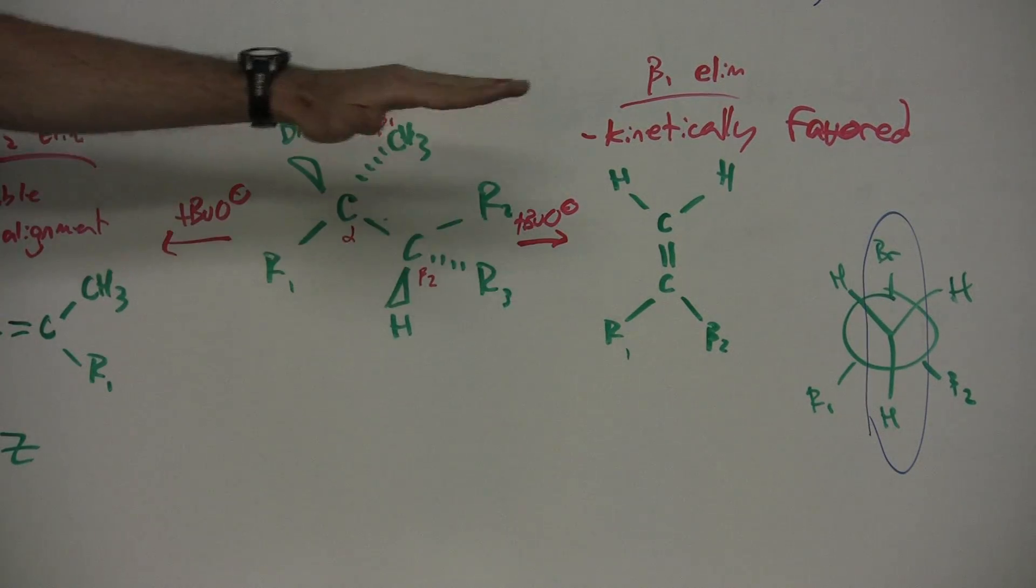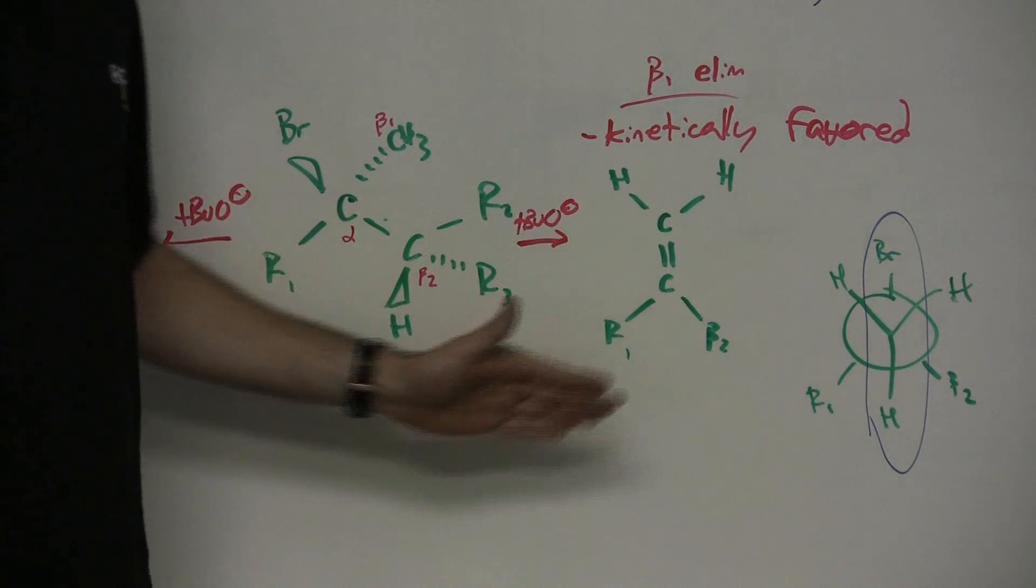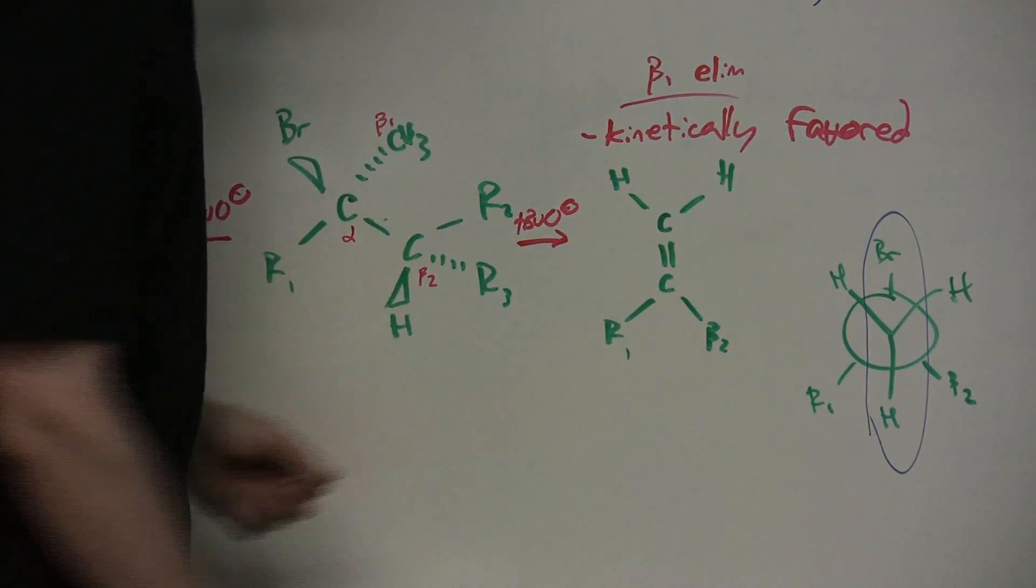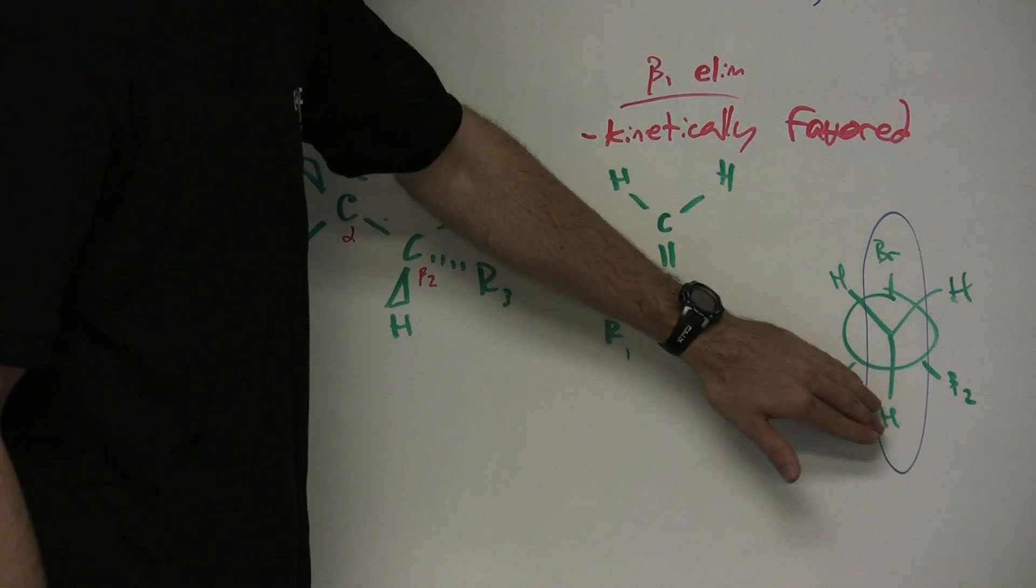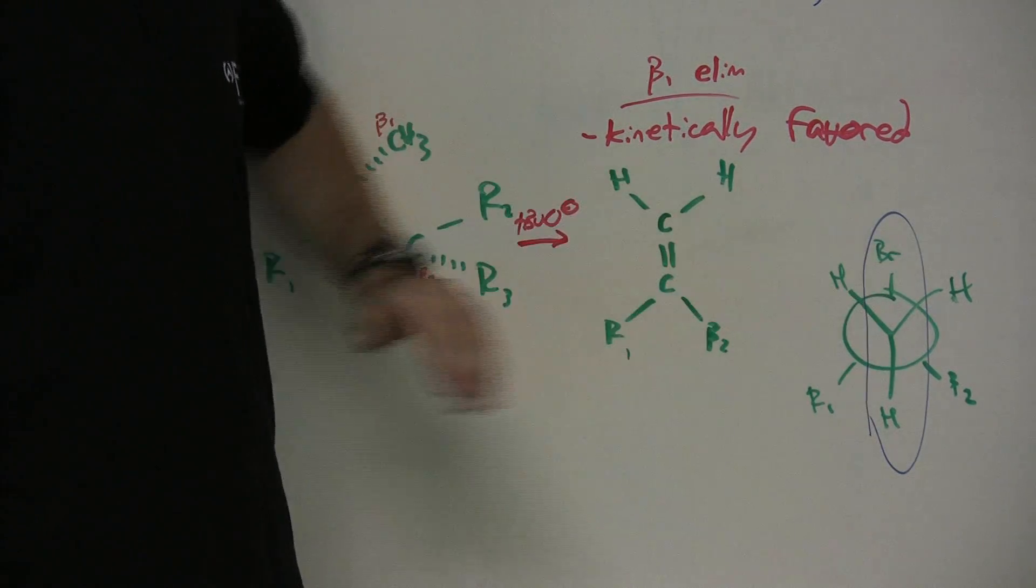So remember, if you're thinking about kinetically favored conditions, you have to be thinking about p-orbitals aligning, and you can use Newman's to look at how that will work. And that's what we have here. This H is anti to this leaving group, the bromine.